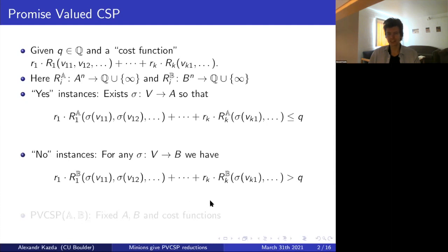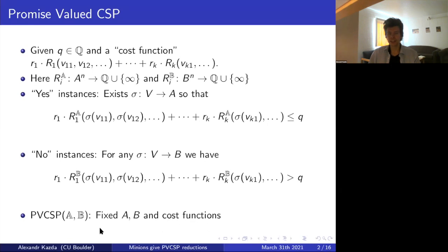PV-CSP(A,B) will be the situation where I fix the domains A and B and the cost functions. Each domain together with cost functions I will sometimes call a valued relational structure. It's a similar situation to CSP of A or PCSP of A, and I want to know how difficult this is to solve. Everything will be finite for this talk, although I'm sure something can be generalized.